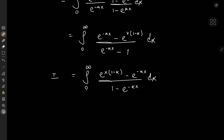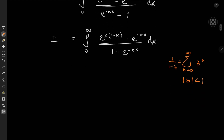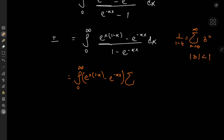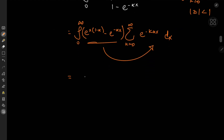We know we can expand 1 over (1 minus z) as the sum over k from 0 to infinity of z^k, provided the absolute value of z is less than 1 — which is clearly satisfied for z equal to e^(-alpha x). So we expand the integrand as e^(x(1 - alpha)) minus e^(-alpha x), multiplied by the sum over k from 0 to infinity of e^(-k alpha x).